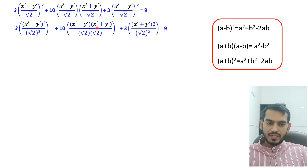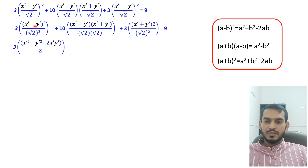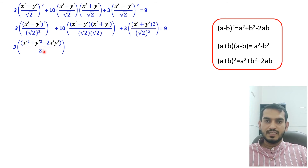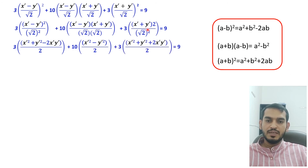Using the identity (a − b)² = a² + b² − 2ab, the first term expands to 3·(x'² + y'² − 2x'y')/2. The second term uses (a − b)(a + b) = a² − b², giving 10·(x'² − y'²)/2. The third term uses (a + b)² = a² + b² + 2ab, expanding to 3·(x'² + y'² + 2x'y')/2. This all equals 9.